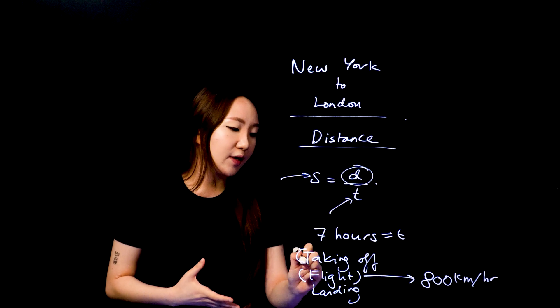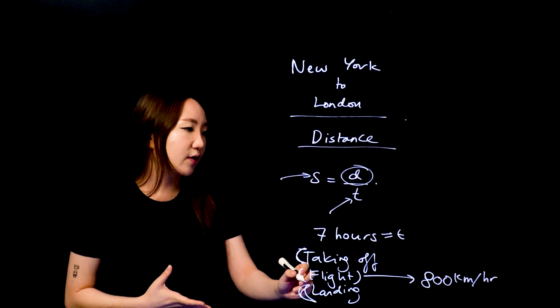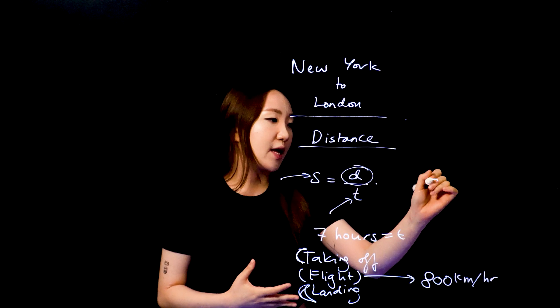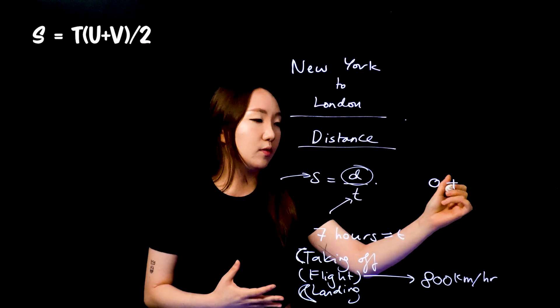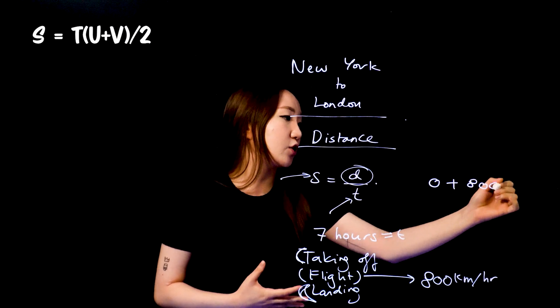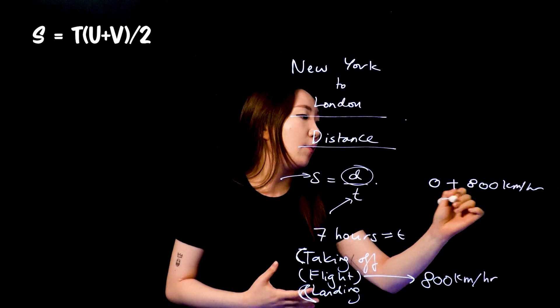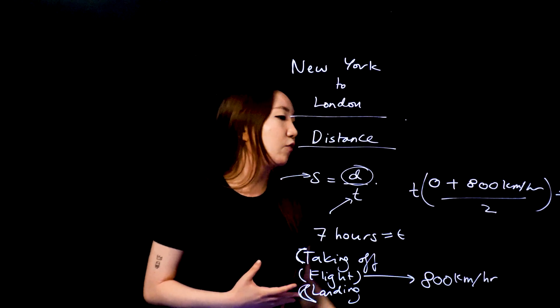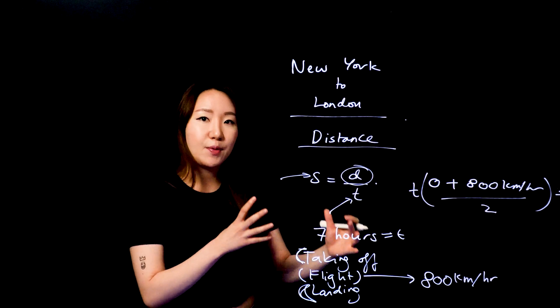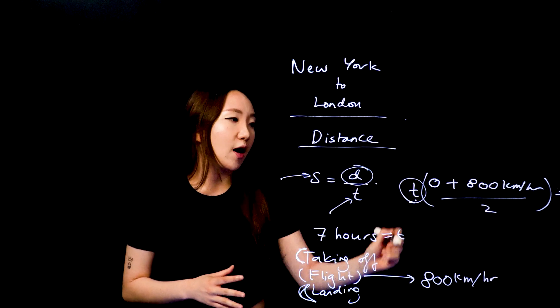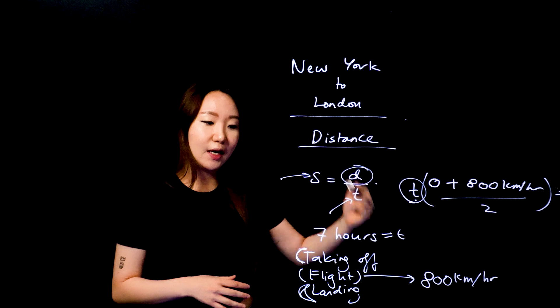And then this take off and landing is the other part I want to deal with. Now for take off and landing, I just want to use a really simple SUVAT and then just say that we start at zero. Obviously, we're starting from stopped and we need to reach this speed of 800 kilometers per hour. And then we can use this equation to find roughly how long that particular distance would be.